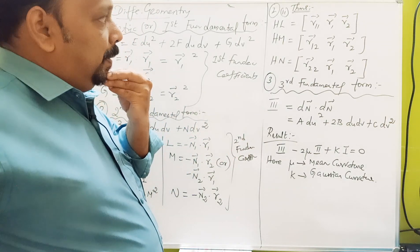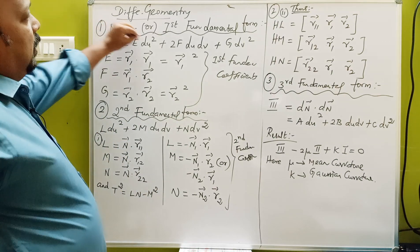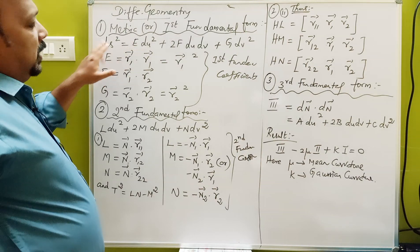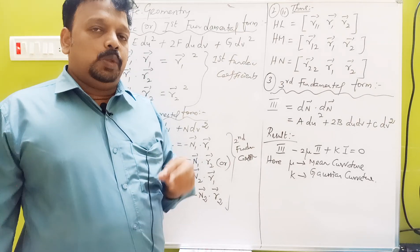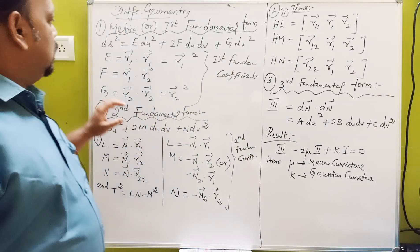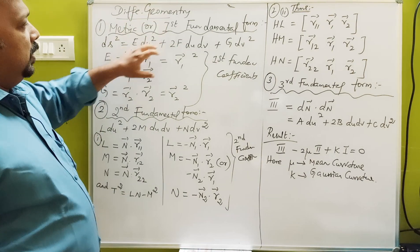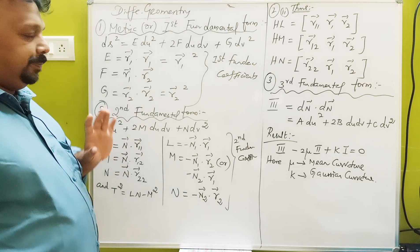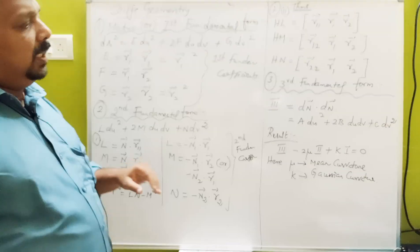So let's talk about the first thing — the metric or first fundamental theorem. What is the first fundamental theorem? A² plus 2AB plus B². So let's say du, dv — so ds² equals EFG. The second fundamental is LMN, and the third is ABC.